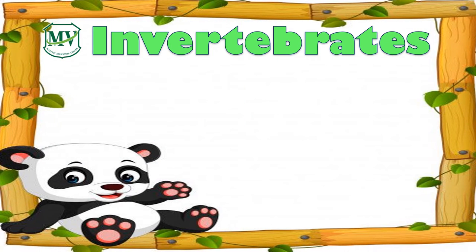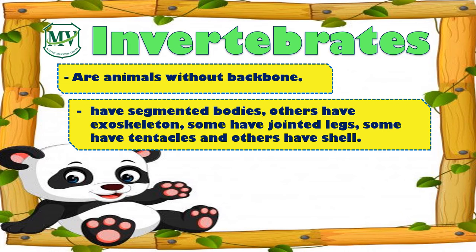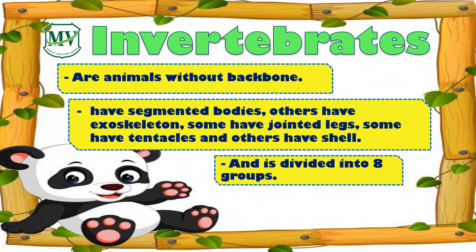Now let's go with invertebrates. Invertebrates are animals without a backbone. Some of them have segmented bodies. Others have exoskeletons. Some of them have jointed legs. And some have tentacles. And others have shells.